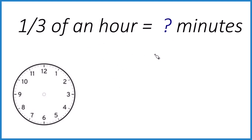Probably the best way is we know that an hour is 60 minutes, so we could just multiply one-third times 60. So one-third of 60, and that would give us how many minutes are in one-third of an hour.